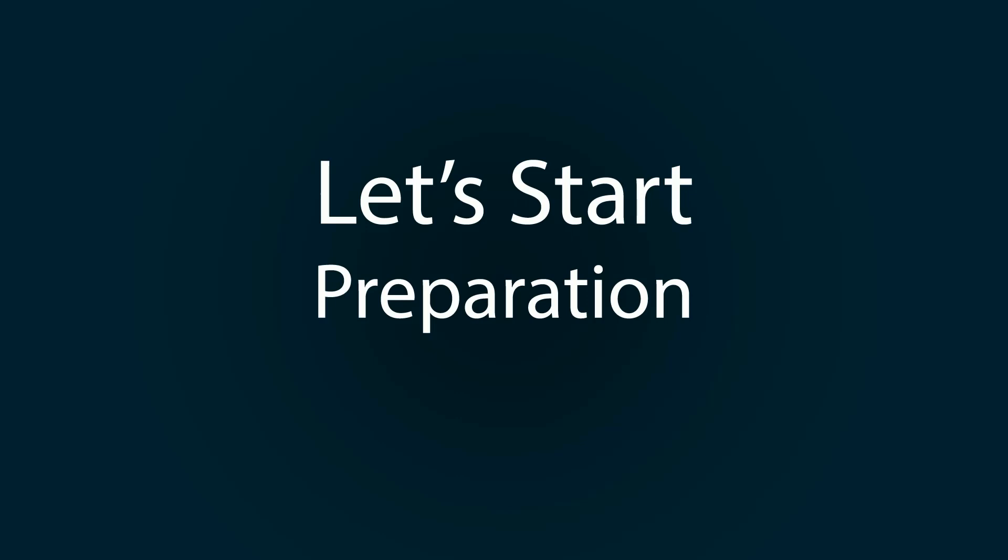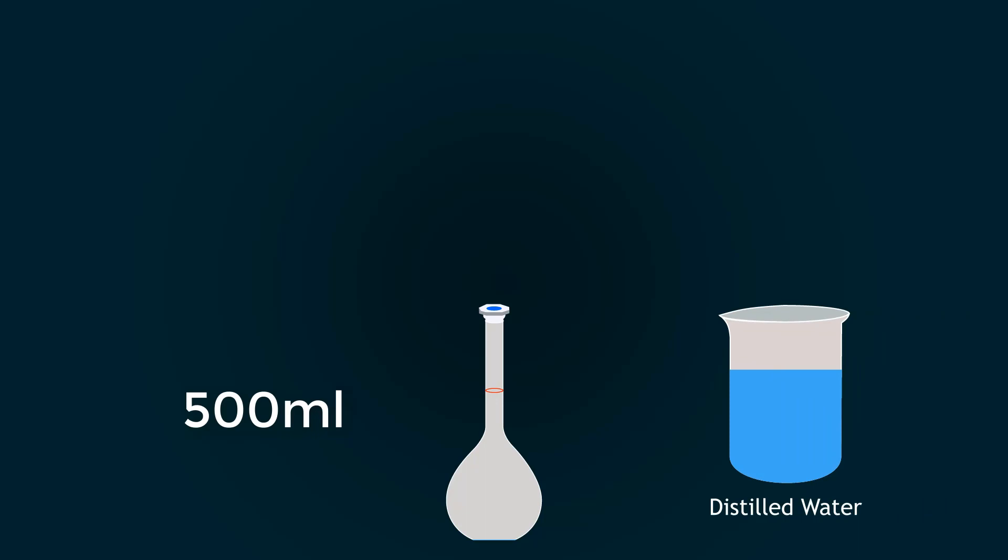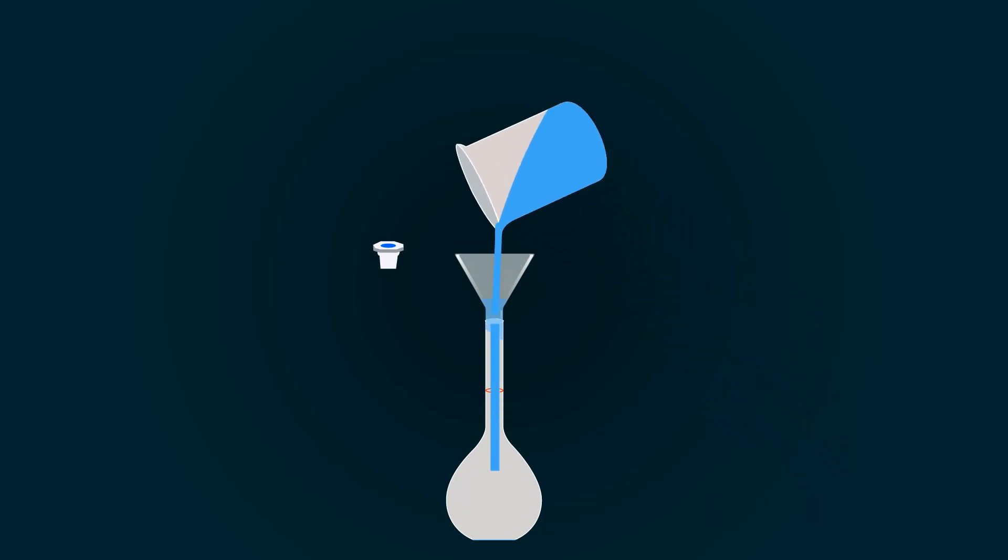Let's start preparation. First of all, take a 500 milliliters volumetric flask and add some distilled water into it with the help of a funnel. Please avoid adding hydrochloric acid directly into the flask, because it may harm you or the flask.